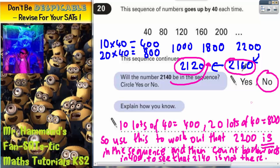And that's your answer. So 2,160 is in the sequence and 2,120 is also in the sequence. But 2,140 is in between them, so it can't be.